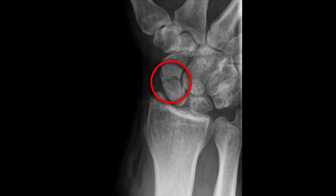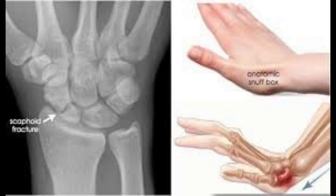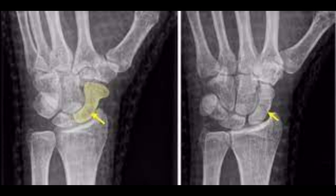What is a scaphoid fracture and how does it happen? In this video, we will discuss in detail the scaphoid fracture in the wrist, one of the most common injuries that can greatly affect hand movement and the ability to perform daily activities. The scaphoid bone is one of the small bones in the wrist area that plays an important role in hand movement and wrist stability.